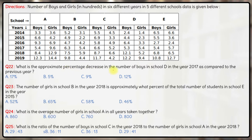What is the approximate percentage decrease in the number of boys in school D in the year 2017 as compared to the previous year? Boys in school D in 2017 is 5.3. The decrease over the previous year: from 6.4 it becomes 5.3, so the decrease is 1.1 on a base of 640, which is 110. The decrease is 110 on a base of 640. To calculate the percentage, multiply by 100 — this is effectively 1/6. If we assume the base to be 660, then 110/660 = 1/6, approximately 16.7%.